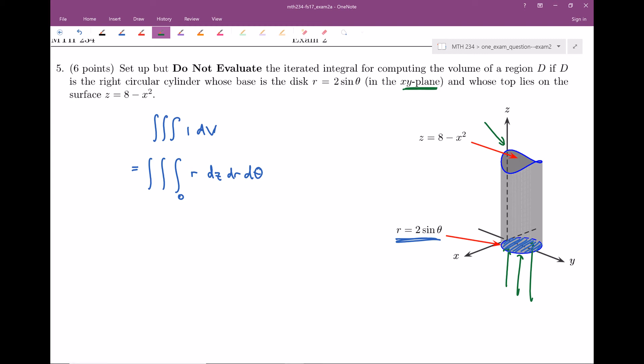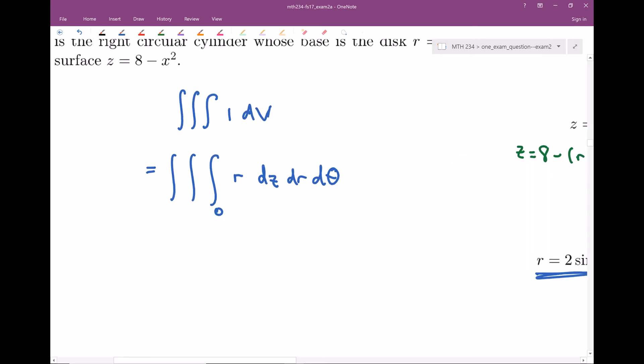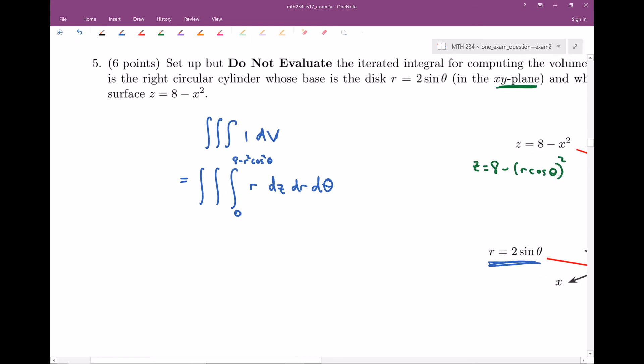You say, ah, but we're doing cylindrical. So in cylindrical, there shouldn't be any x's. So let's go ahead and rewrite this. So z is equal to eight minus, and instead of x, we're gonna put r cosine theta, and we need to square that. So we're gonna write eight minus r squared cosine squared theta.